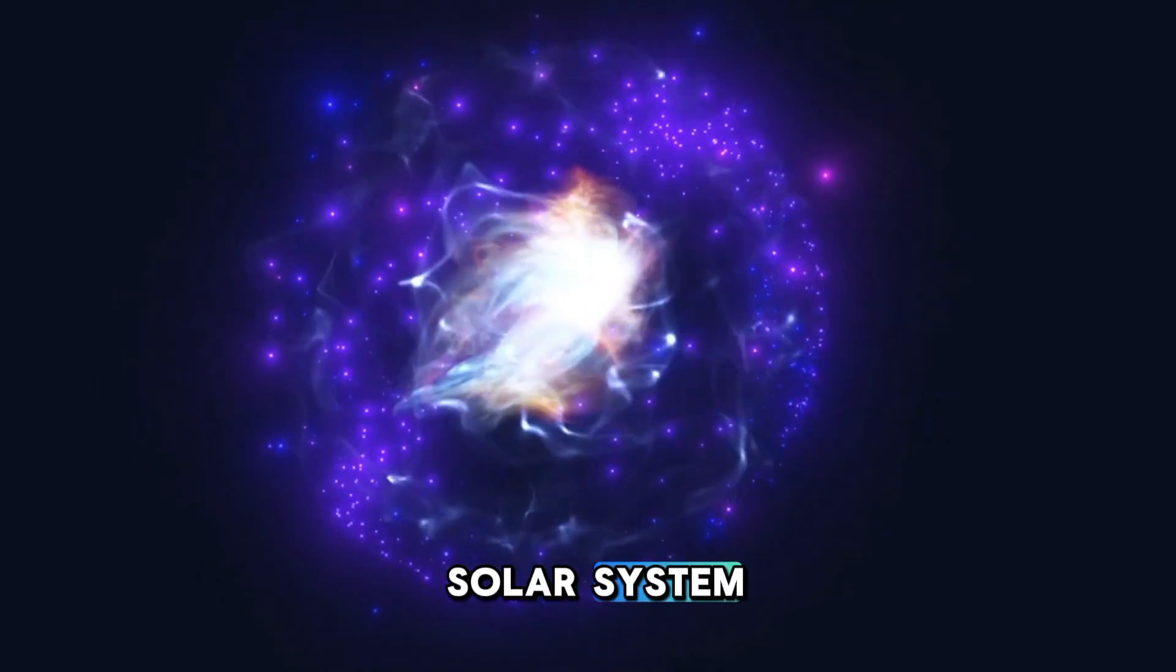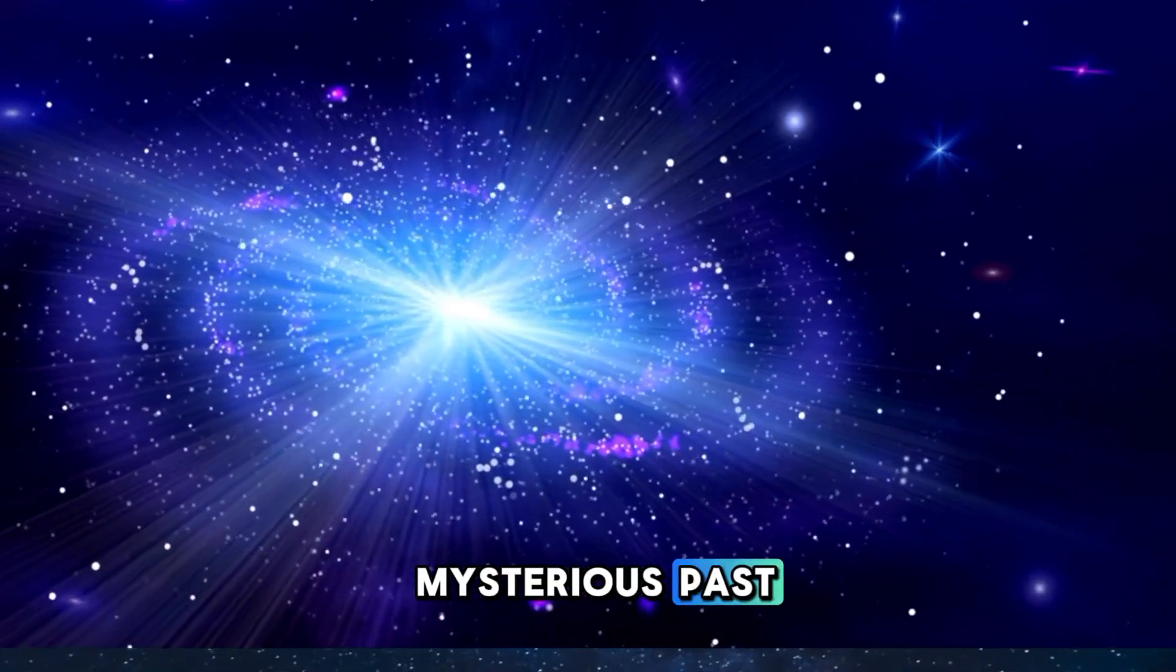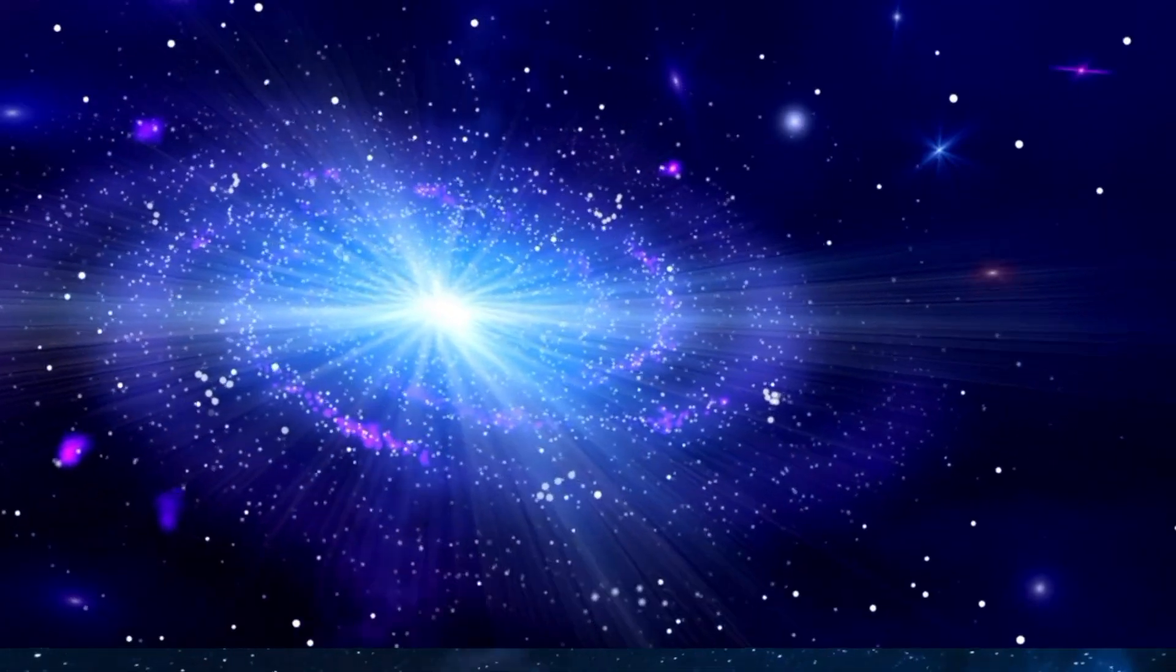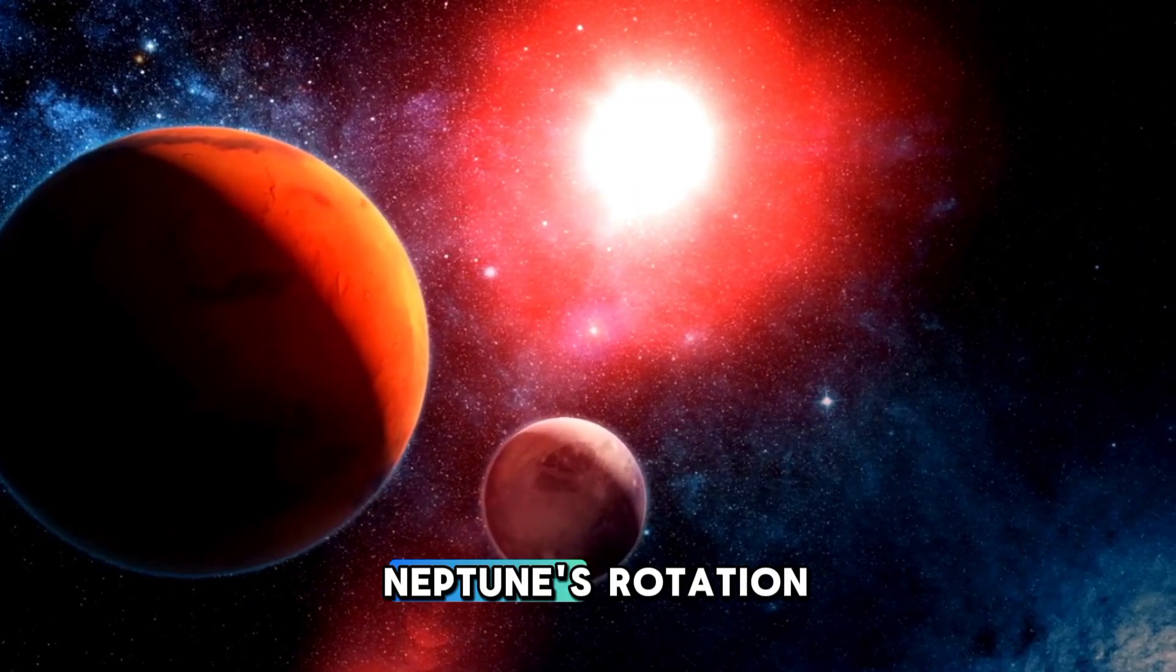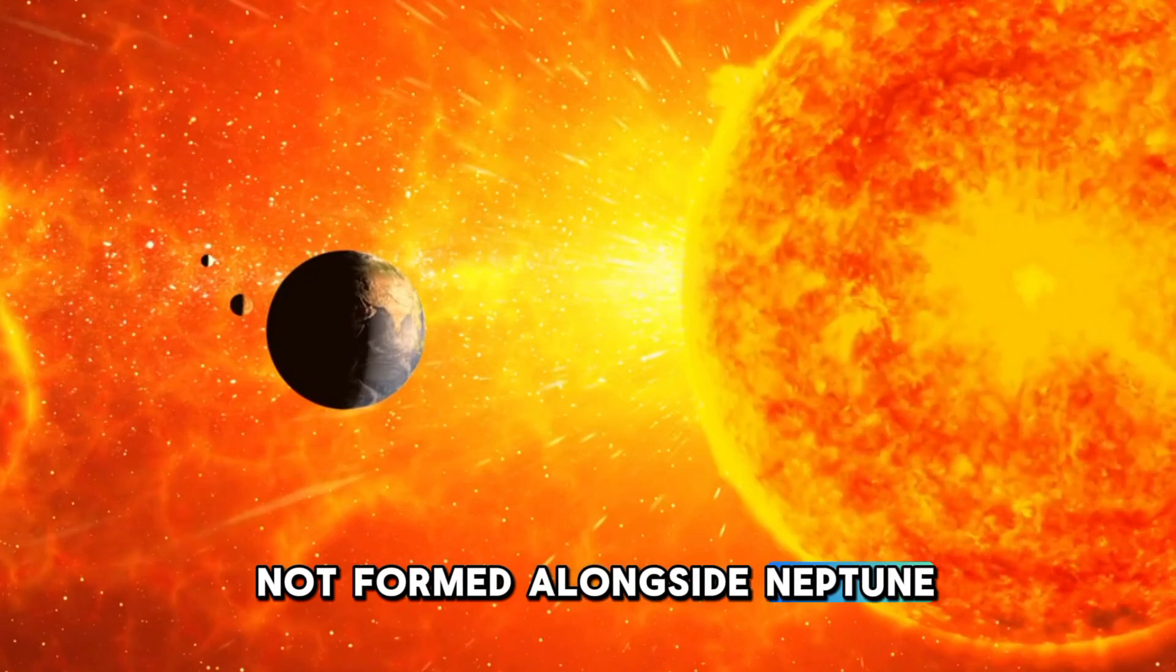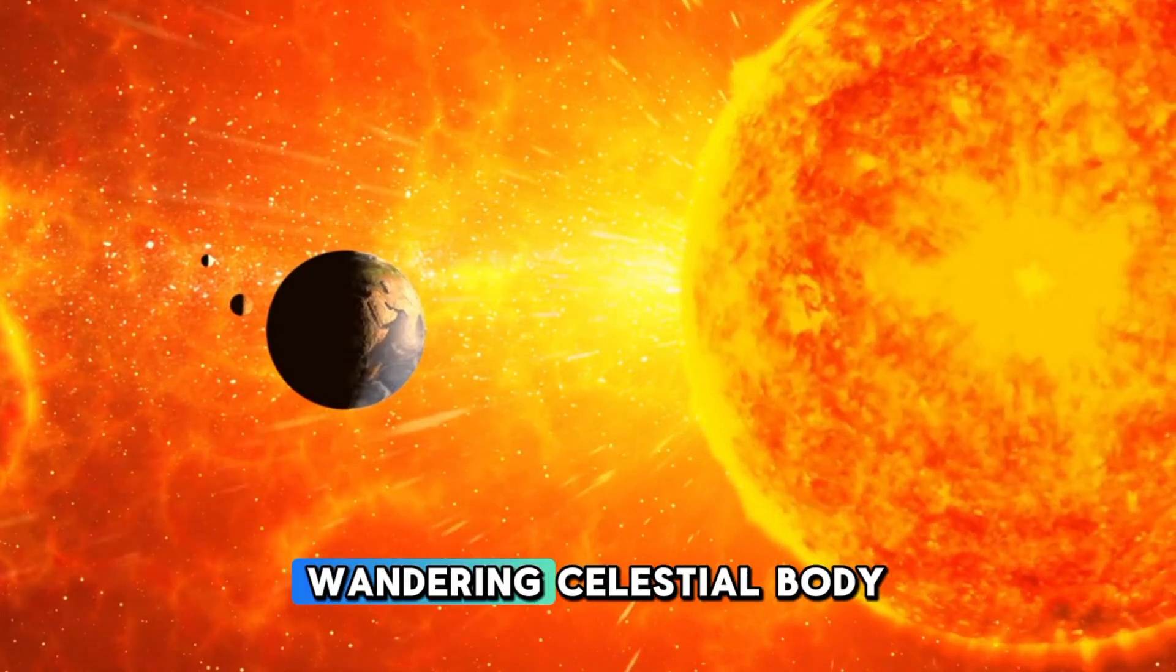A moon with a mysterious past: Triton's orbit is unlike that of any other major moon. It moves opposite to Neptune's rotation. This peculiar motion suggests that Triton was not formed alongside Neptune, but was instead a wandering celestial body, possibly from the Kuiper Belt, that was captured by Neptune's immense gravity.